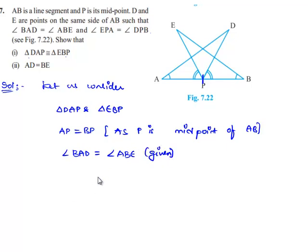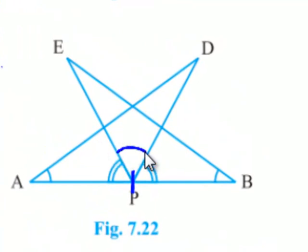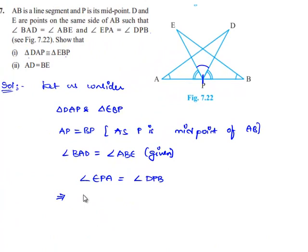He also given that angle EPA equals angle DPB. Now what I do is add angle DPB to both angles. That is, angle EPA plus angle DPB equals angle DPB plus angle DPB.